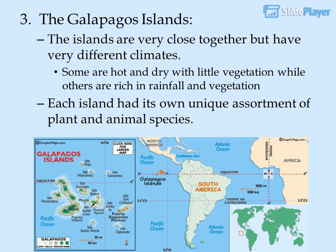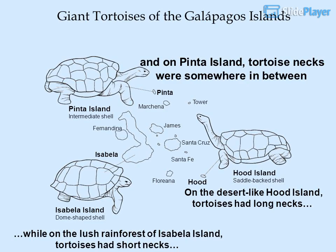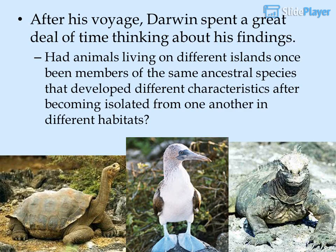Each island had its own unique assortment of plant and animal species. Giant tortoises of the Galapagos Islands varied by island: on desert-like Hood Island, tortoises had long necks and saddleback shells, while on the lush rainforest of Isabella Island, tortoises had short necks and dome-shaped shells. On Pinta Island, tortoise necks were somewhere in between.